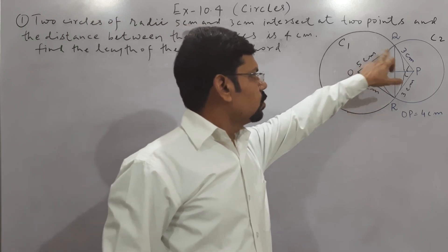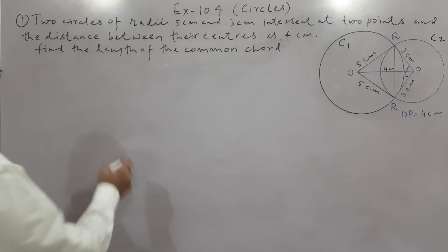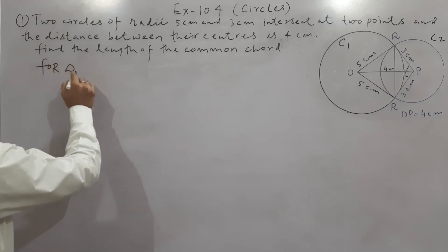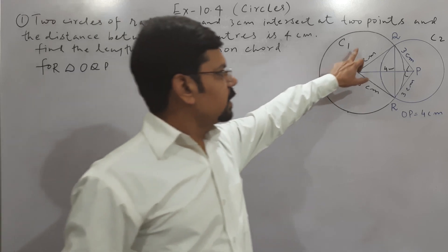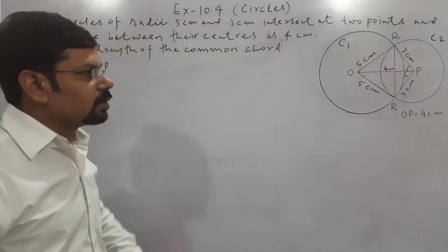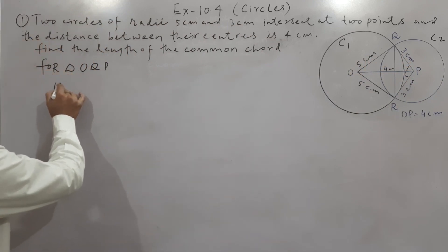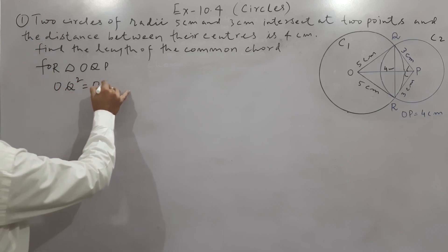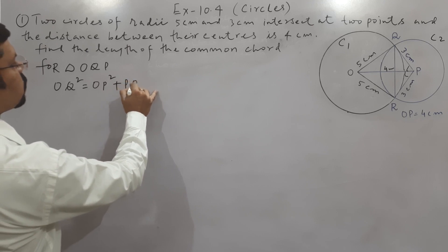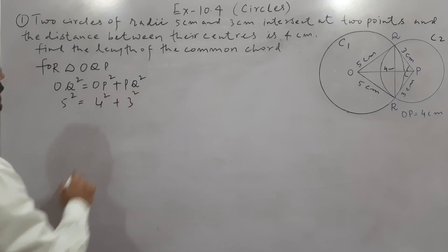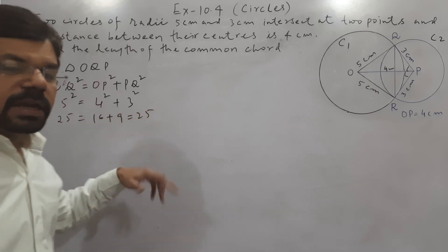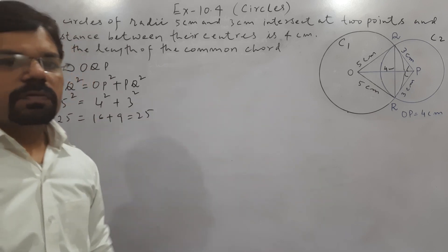there are two triangles OQB and ORP. So first of all, for triangle OQB, there are three sides: 5 cm, 4 cm and 3 cm. Let's check it as a Pythagorean triplet. Longer side is 5 cm, it means OQ² = OP² + PQ². OQ² is 5 cm, so 5² and OP is 4 cm, 4² plus PQ is 3 cm, 3². 5² is 25, 4² is 16, plus 9 equals 25. Both sides are equal. It means this is a Pythagorean triplet. It means these sides are of right triangle.